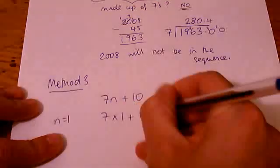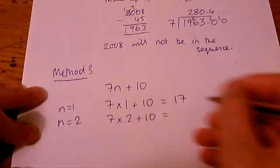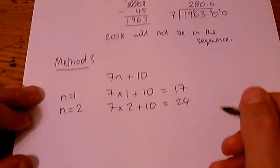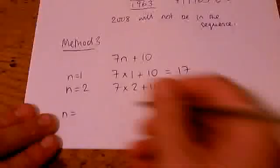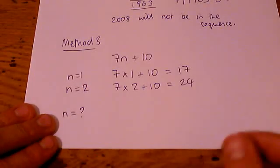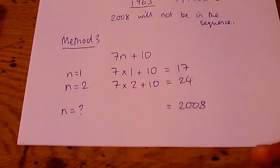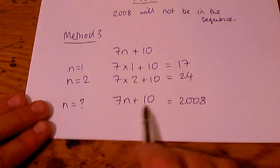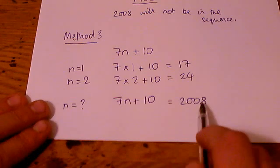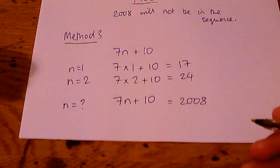Now, if I was working out the first term, I would do 7 times 1 plus 10, which is 17. If I was working out the second term, it would be 7 times 2 plus 10, which is 24. Now, if I'm going to try and find a number which I can use, an unknown number, and I'm going to try to make 2008, how can I figure out what number that would be? Well, one way of doing it is to form an equation and just to write down the formula for your nth term and say it's equal to 2008. If I can solve that equation and then work out the value of n, I'll be able to tell what term in the sequence this is.